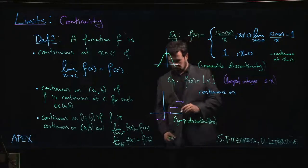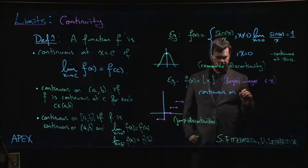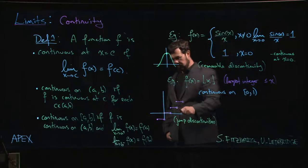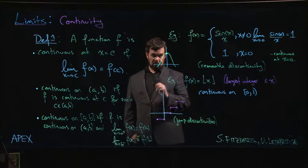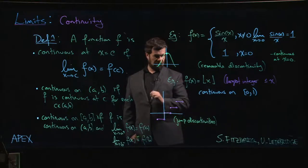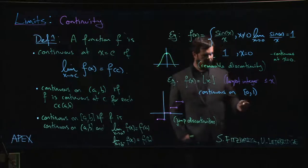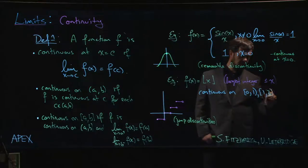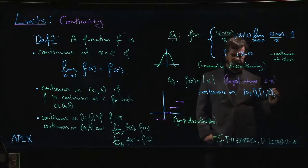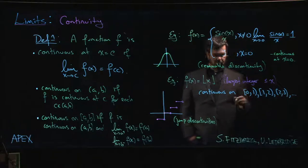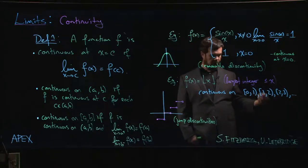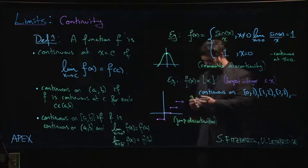Nonetheless, we could say that this function is continuous on - well, it's continuous from 0 to 1, and in fact we can include 0 because at an endpoint, for continuity at an endpoint, it's enough to say that the limit as x approaches 0 from the right is equal to f of 0, which is the case. So it's continuous on [0,1), it's continuous from 1 to 2, it's continuous from 2 to 3 and so on, and also from -1 to 0 and so on. So it's continuous on all these half-open intervals.